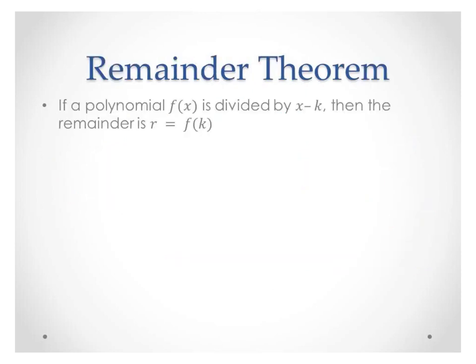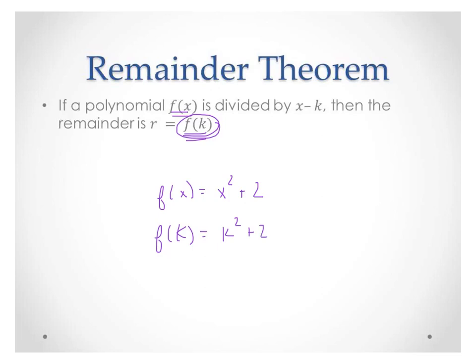The remainder theorem says: if a polynomial f of x is divided by a binomial x minus k, then the remainder r equals f of k. Notice the difference — f of x versus f of k. This is f of x evaluated at k. So if f of x equals x squared plus 2, then f of k would be k squared plus 2 — evaluated at k. That's what synthetic division does for us: it evaluates for that number. So the remainder theorem says the remainder is f of k.